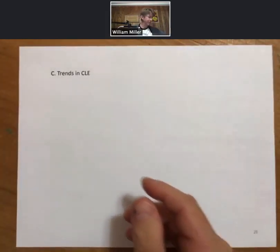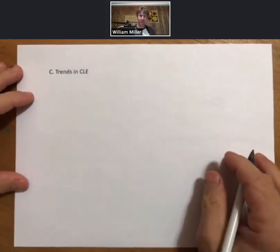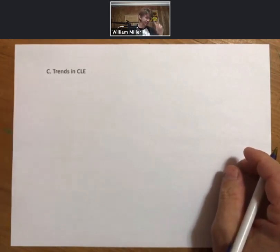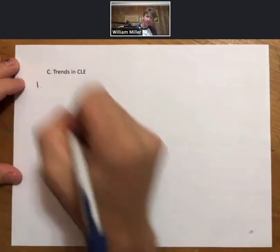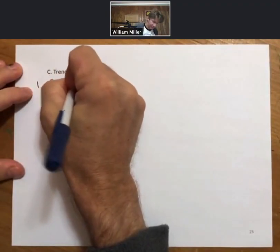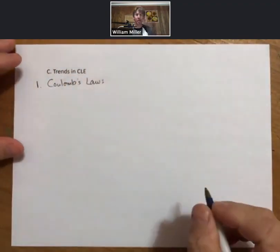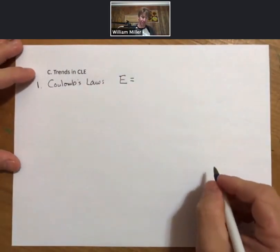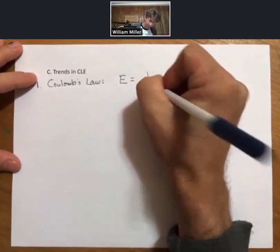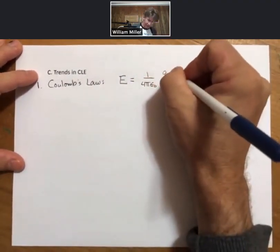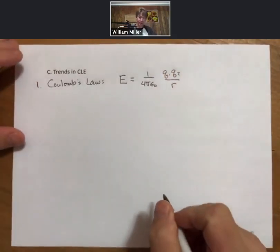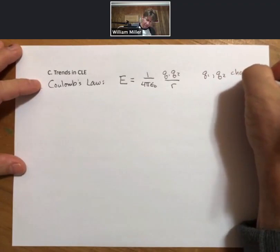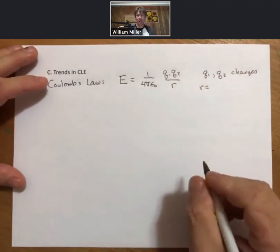Now let's hit the last two pages which talk about trends in crystal lattice energy, and these are important because these will end up being trends in intermolecular forces as well. So there are two trends. Both of these trends follow something called Coulomb's Law, and Coulomb's Law says that the energy of two charges is equal to one over four pi epsilon naught times q1 times q2 over r.